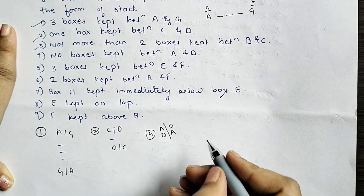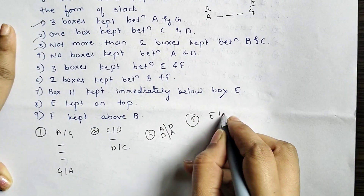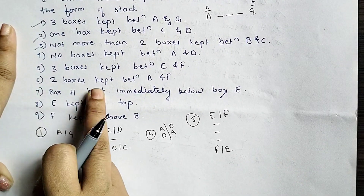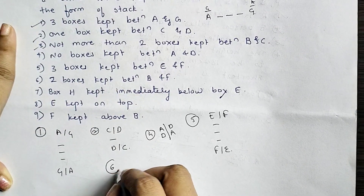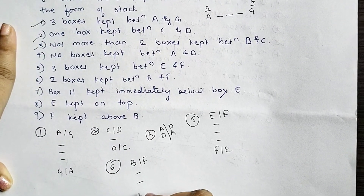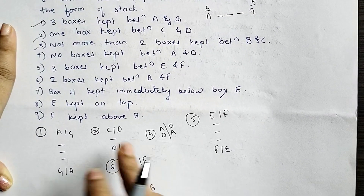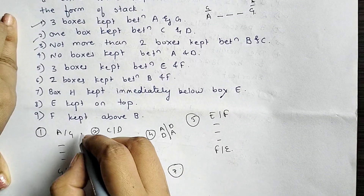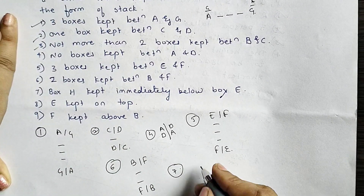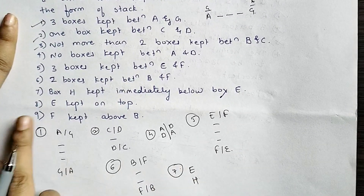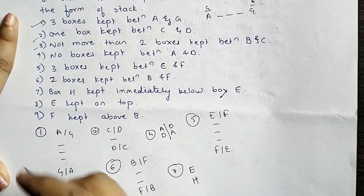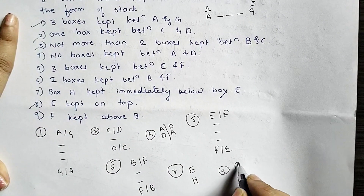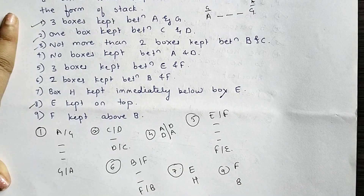3 boxes are kept between E and F — so E and F have 1, 2, 3 boxes between them. 2 boxes are kept between B and F. H is kept immediately below E. E is kept on the top — this is a direct statement. F is kept above B, but 'immediately above' is not specified, so F can appear anywhere above B.